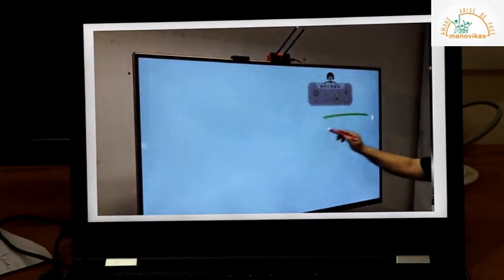A smart board or a digital board is an electronic touch screen. A classroom board is similar to this.